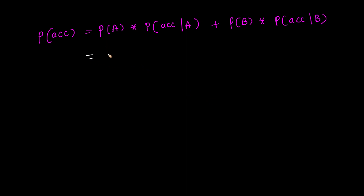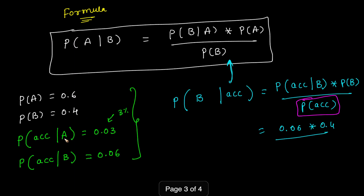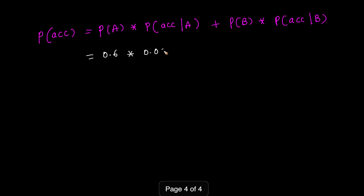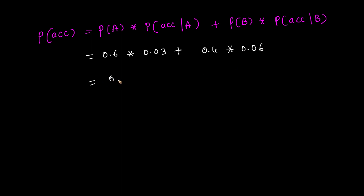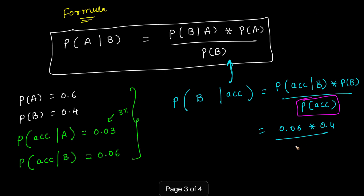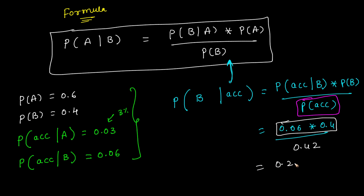Substituting the values: P(accident) = 0.6 × 0.03 + 0.4 × 0.06 = 0.018 + 0.024 = 0.042. Then P(B|accident) = 0.06 × 0.4 / 0.042 = 0.024 / 0.042 = 0.57. Both approaches give the same answer of 0.57.